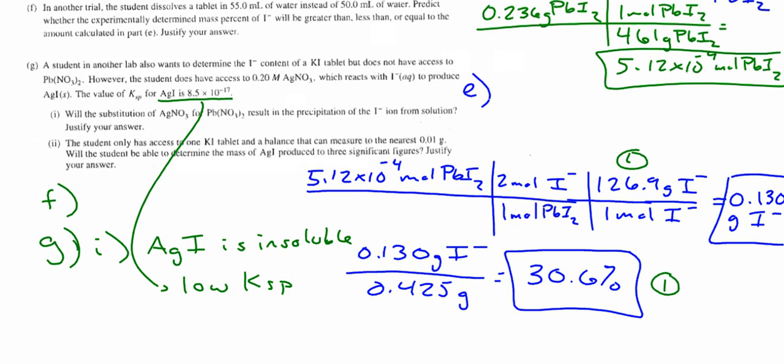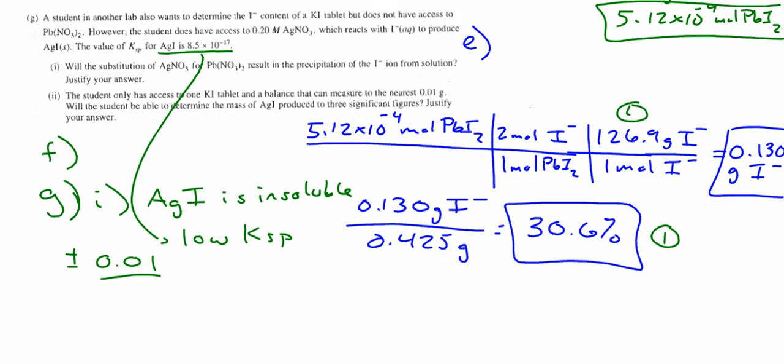The student only has access to one mole of KI tablet and a balance and can measure to the nearest 0.01 grams. Will the student be able to determine the mass of AgI produced to three significant figures? Justify your answer. Yeah, this is not hard. Can they go to three sig figs? They can't because there's not a digit. This is what it's asking. We are going to the thousandth spot, right? And there's no value in the front. So, I mean, the balance is plus or minus 0.01. So they're asking, can you go to three sig figs? It's literally saying, like, let me just read it. I just find it funny. It says, no, if the mass can be measured to 0.01, then the mass of the dry precipitate, which is less than one gram, will be known only to two sig figs, won't it?